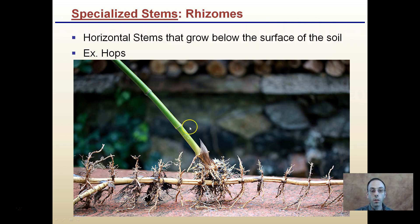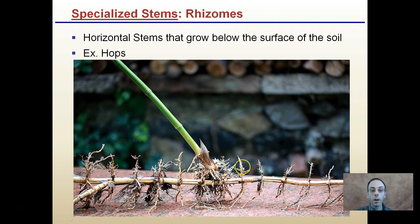We might see one area here — hops is a plant that does this — and then all of a sudden we see another plant that pops up over here. Those two might be connected by a rhizome, and this contributes to how certain plants can spread very quickly through an area.